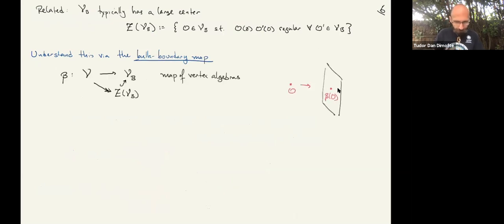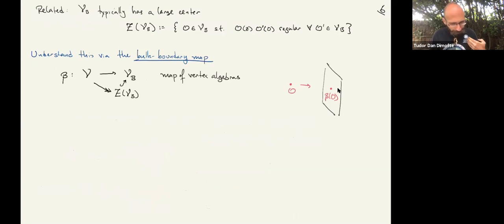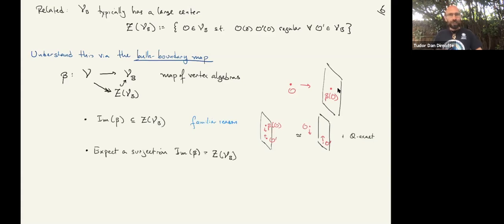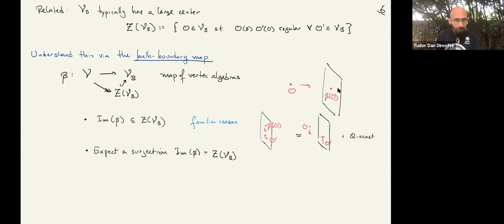One way to understand the center of the boundary algebra is by thinking about a bulk-boundary map. Physically, the bulk-boundary map just says: take a bulk operator and bring it to the boundary — that's a Q-exact operation, a translation in the topological direction. Naively, that's a map of vertex algebras from the bulk algebra to the boundary algebra, but it factors through the center because if a boundary operator comes from something in the bulk, then we can compute an OPE by pulling it back into the bulk, and then the OPE is non-singular. So the image of the bulk-boundary map lies in the center.